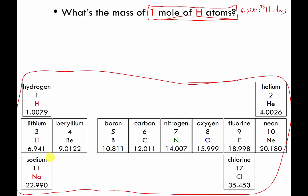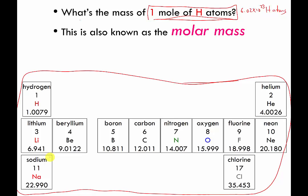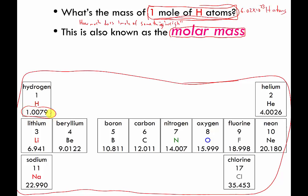This idea of how much one mole of something weighs — or more formally, what's the mass of one mole of something — has a special name in chemistry: it's called molar mass. So when I ask what's the mass of one mole of hydrogen atoms, the answer is one gram. Another way of asking the same question is: what's the molar mass of hydrogen? All that is asking is how much does one mole of hydrogen weigh. You can ask this for any of the elements.